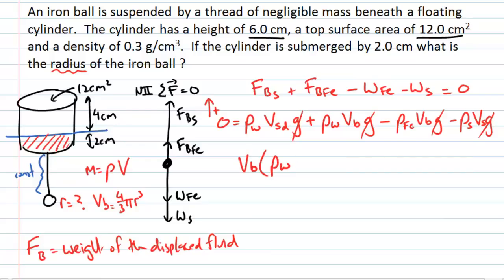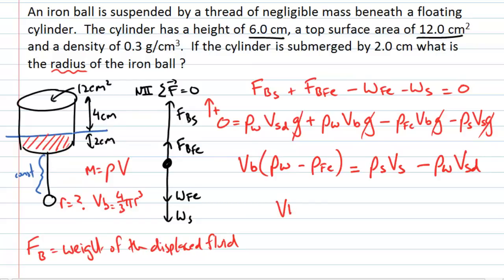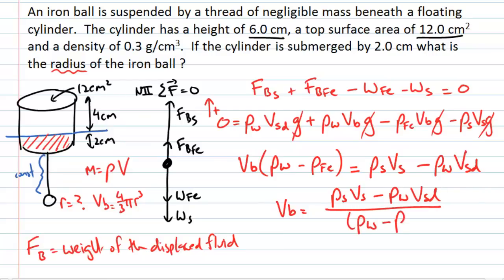I want to make the volume of the ball the subject, so I factorise it out since it appears in two terms, giving: volume of ball times (density of water minus density of iron). At the same time, I move the other two terms to the right-hand side: density of styrofoam times volume of styrofoam, minus density of water times the volume of styrofoam displaced below the water. Dividing gives the volume of the ball equals (density of styrofoam × volume of styrofoam − density of water × displaced volume of styrofoam) divided by (density of water − density of iron).